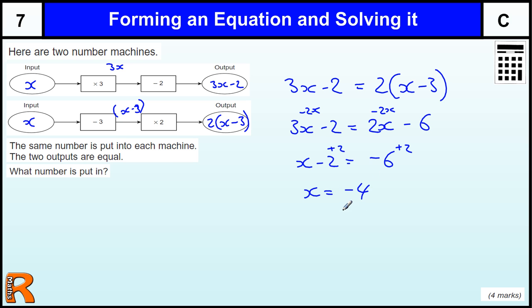So that's a 4 mark question. There's one mark for having either of these two outputs, with whatever letter you want to call it. There is one method mark for actually saying these two are equal, and then there's a method mark for multiplying out the brackets to get into this point, and then one for the answer.